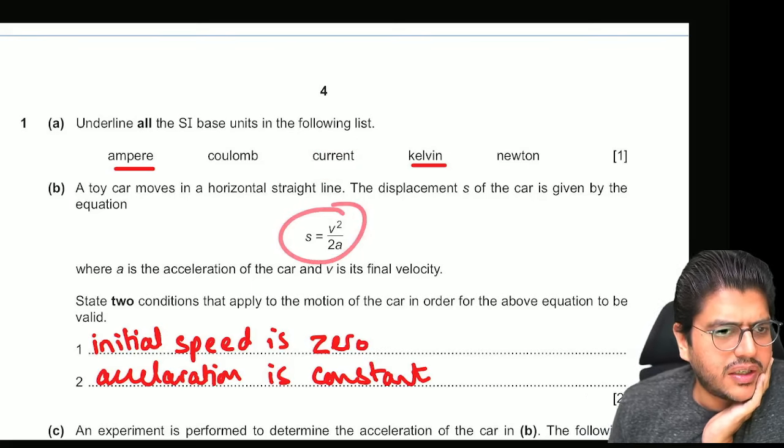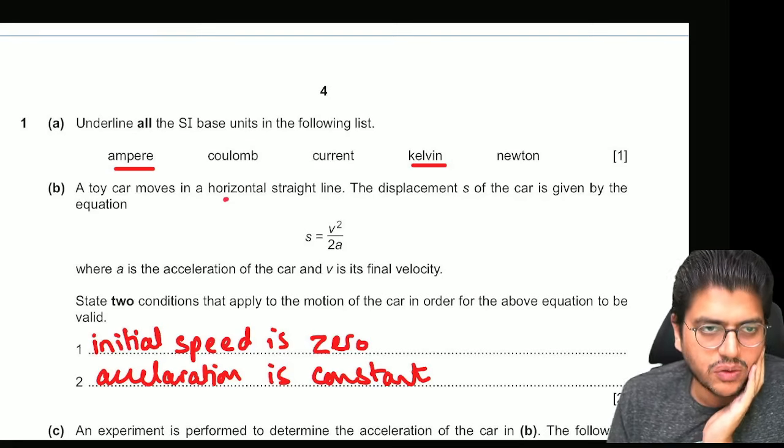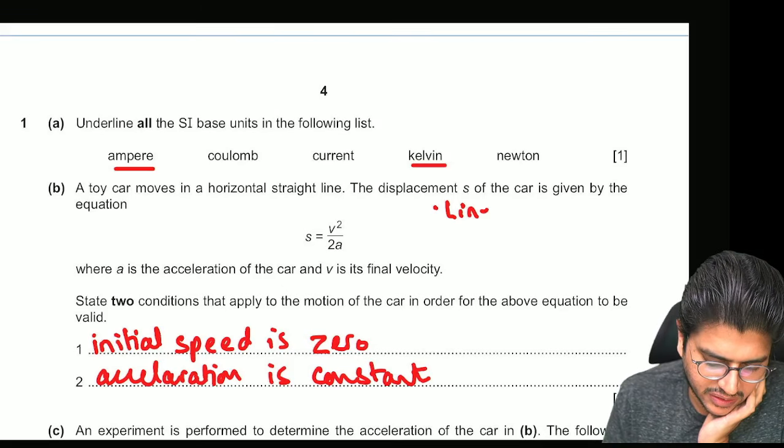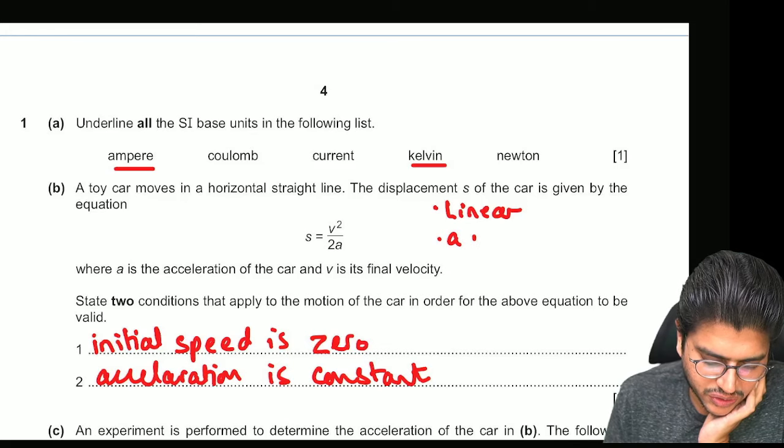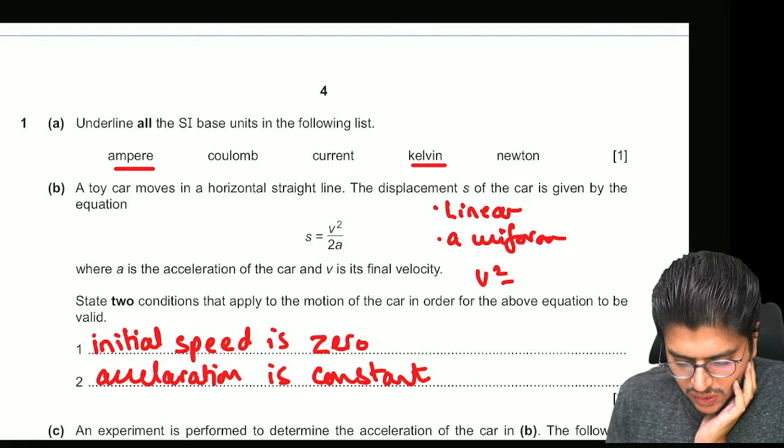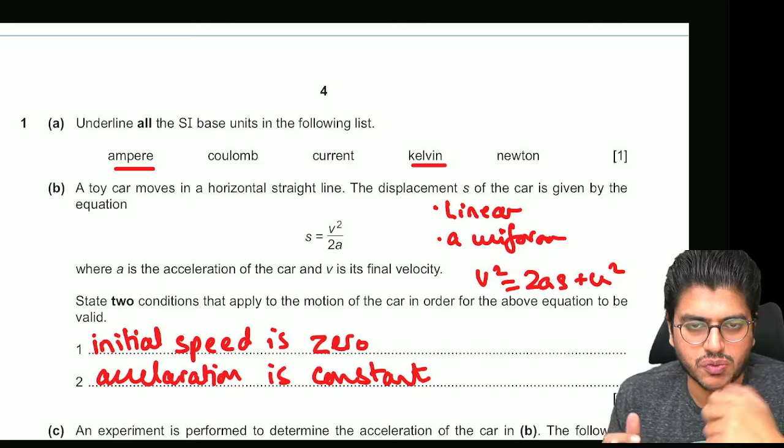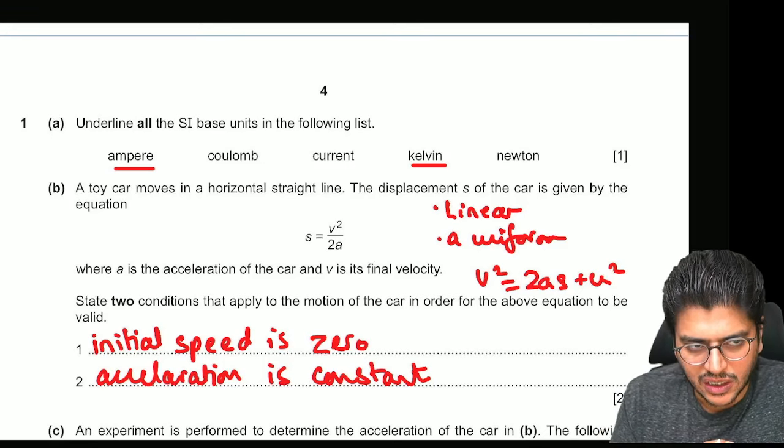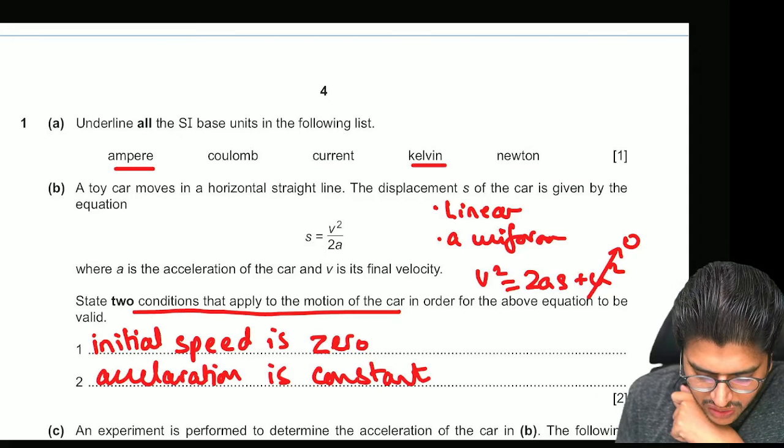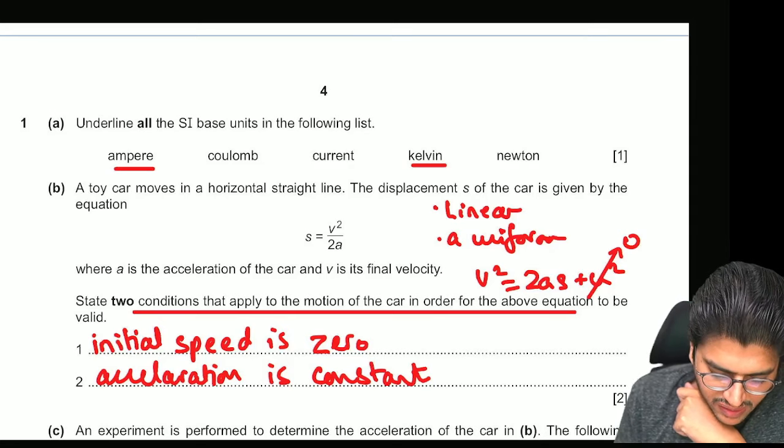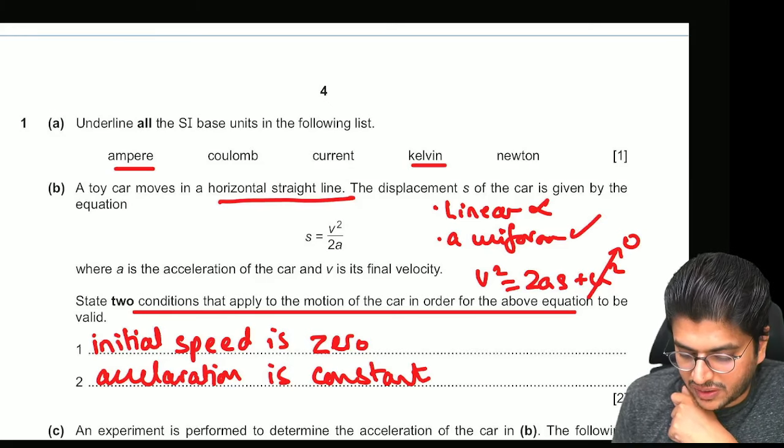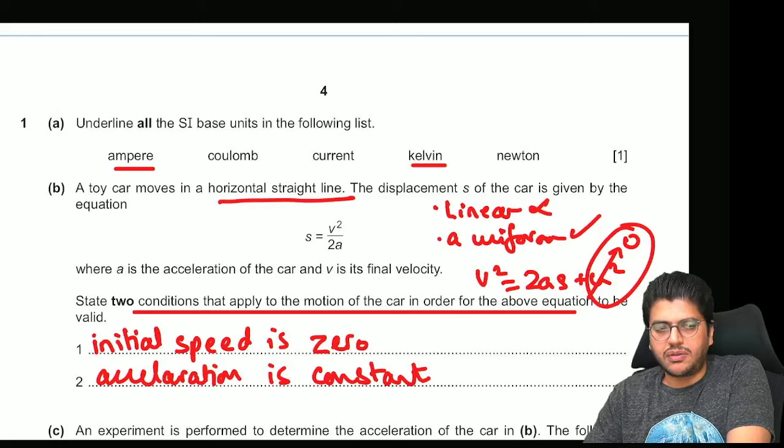Part B. S is V squared over 2A. So they're using an equation of motion. And you know that there are some conditions for equations of motion. Do you remember them? What are the two conditions? Number one, it should be linear, the motion. And the second, your acceleration should be uniform. Acceleration should be constant. And which equation is this one? So it's V square equals 2A.S plus U square. Or V square minus U square equals 2A.S. But you don't see U square. So what does that mean? That means that this has been taken as zero. So what are the two conditions that apply to the motion of the car in order for the above equation to be valid? They've already given you one condition which is straight line. So you can't write linear motion. But you can definitely write that the acceleration is uniform. And the third condition is that the initial speed must be zero.